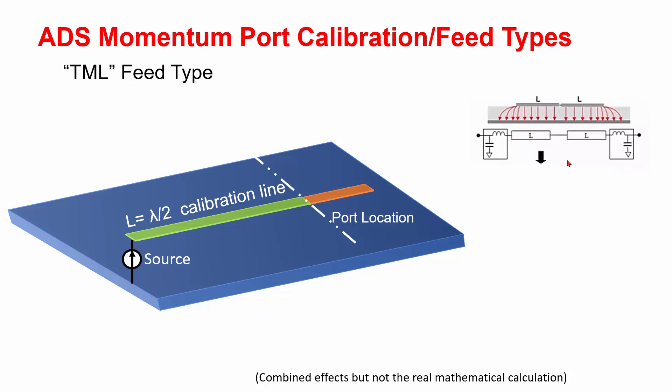From which we are able to extract a model for the one L calibration line. The S total at the source equals to the original line plus these one L S parameters. With TML calibration, the structure has no open end at a port.